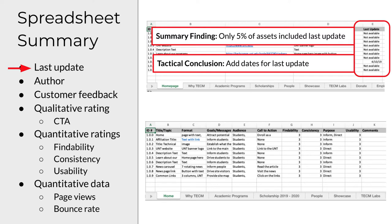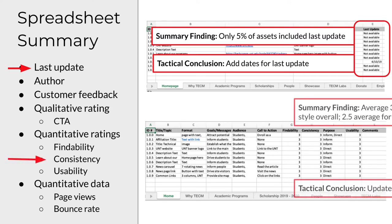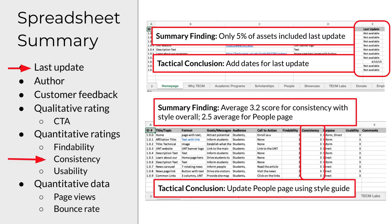Here's another example. Let's say you found the average score for consistency in following the style guide was 3.2 out of 5. It'll be even more insightful if you recognize that the consistency scores were lowest on average for the content on the people page. If you conclude the people page should be updated, then you've created a tactic for improving the quality of content and closing the gap between what is and what the content owners want, which is accurate, high-quality content.